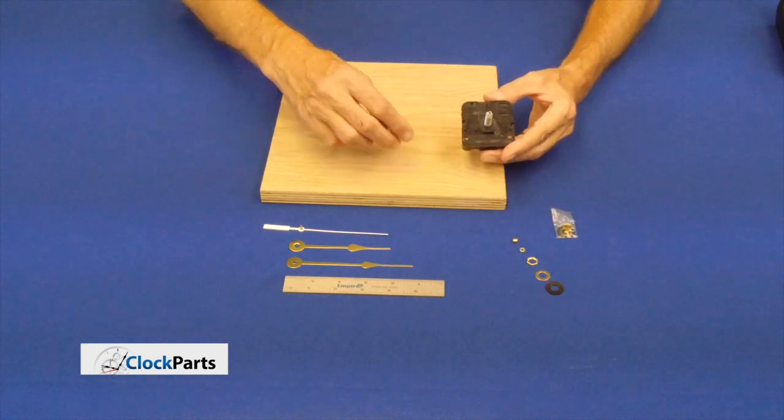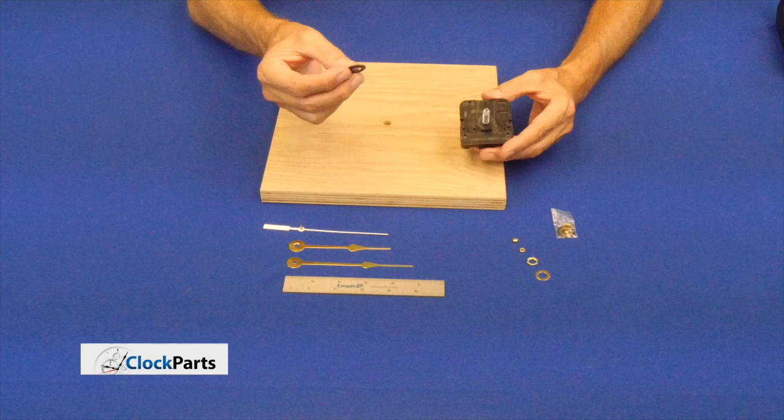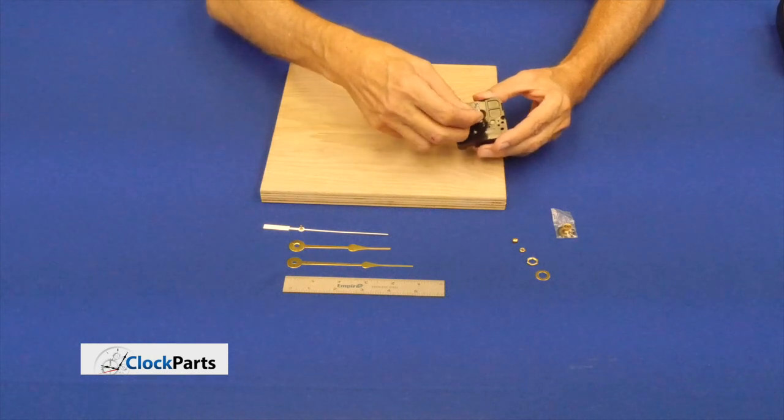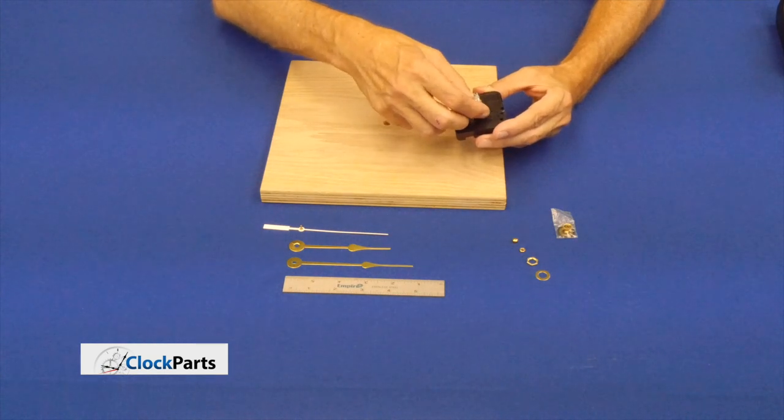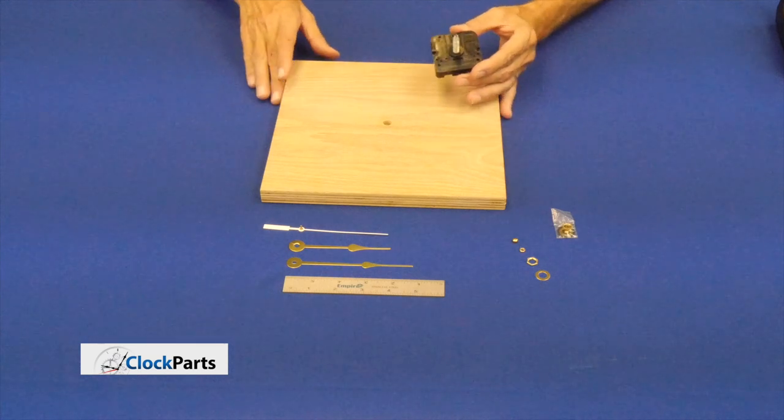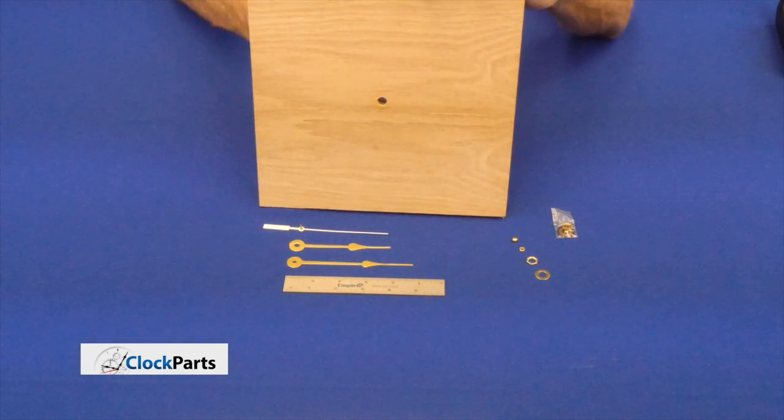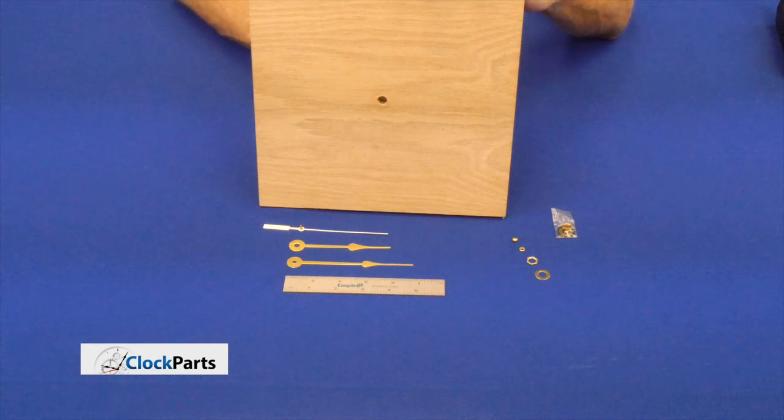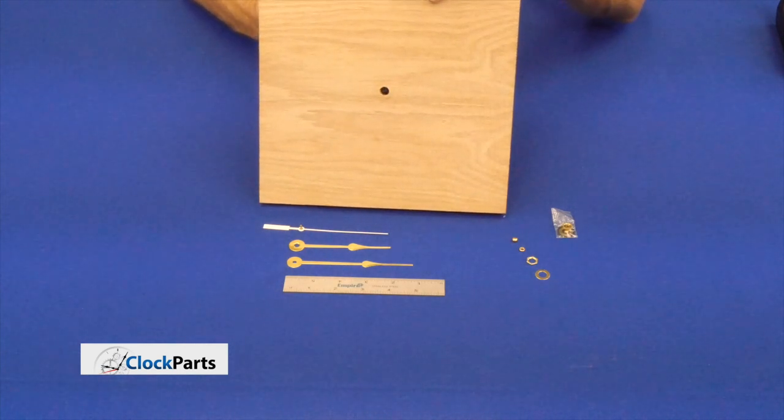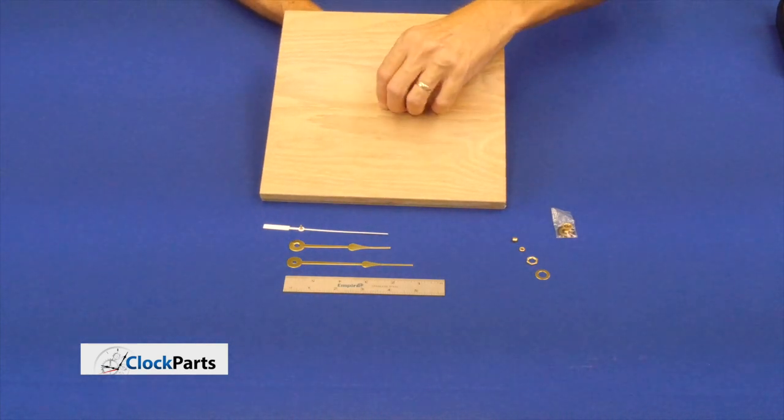So, the first step is we take the black washer and put that on there. And then we're going to put our movement through the mounting hole.